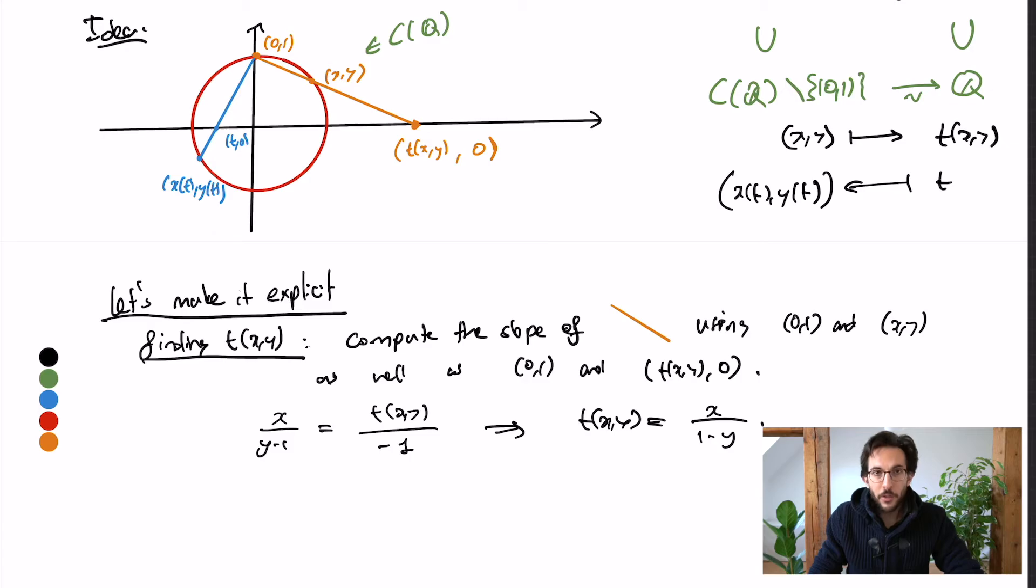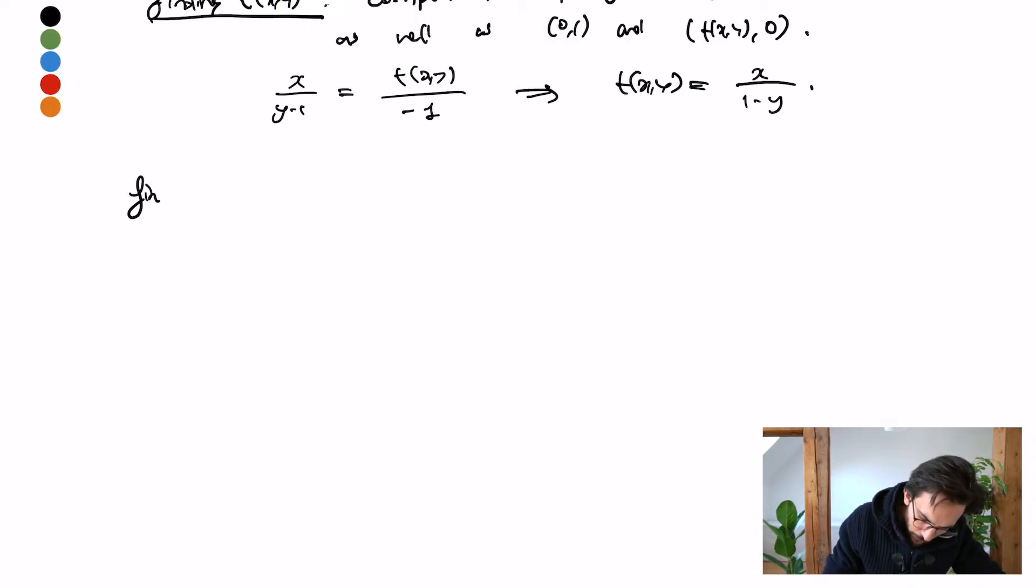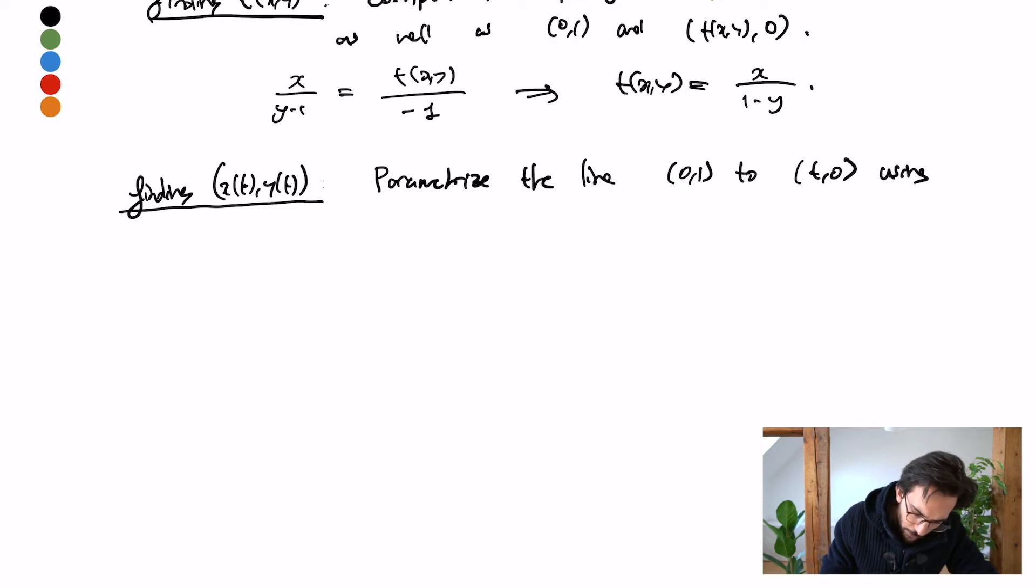Now, let's do the more difficult version of finding x(t) and y(t) from t. So, finding x(t), y(t). What I will do is, I will parametrize the line from (0, 1) to (t, 0). And I will do so using a dummy variable u.